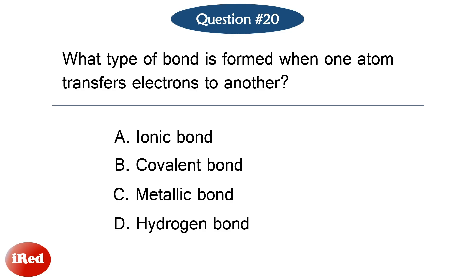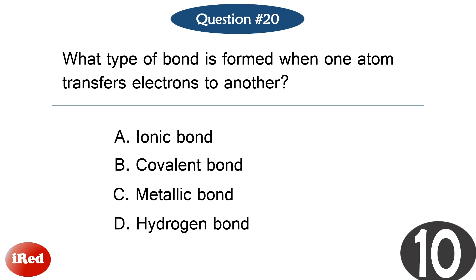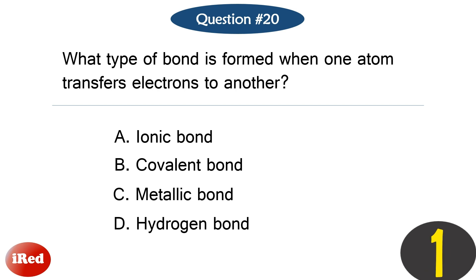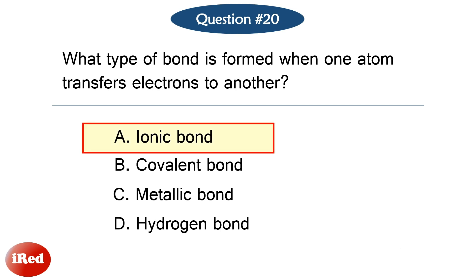Question number 20. What type of bond is formed when one atom transfers electrons to another? The correct answer is letter A, ionic bond.